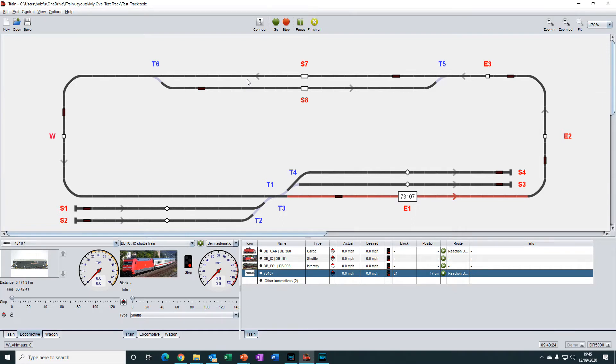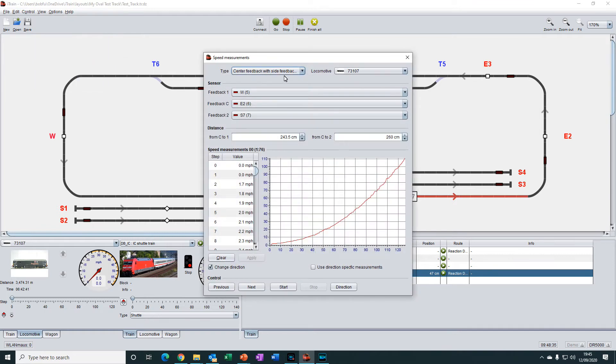The speed measurement feature is opened by going up to the view menu, then down to speed measurements and then click on locomotive. We're going to be talking about the three methods shown in the type drop down here.